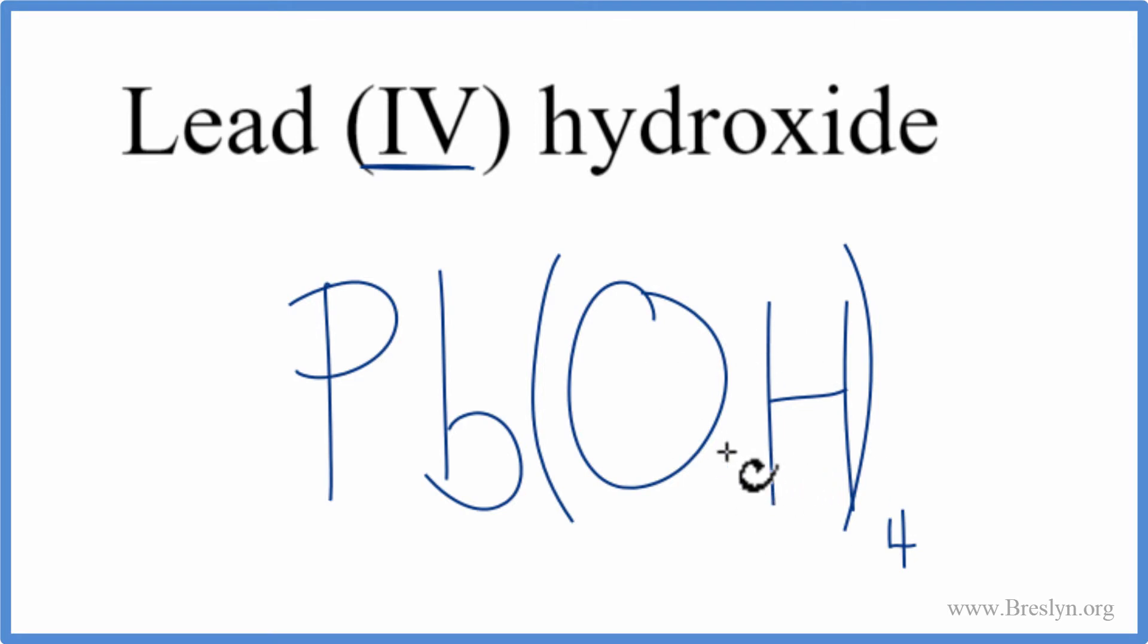So this is the formula for lead(IV) hydroxide. Let's check our work to be sure, though. We said lead, because of this Roman numeral here, that tells us we have a 4+, and we said the hydroxide was 1-. We have 4 hydroxide ions.